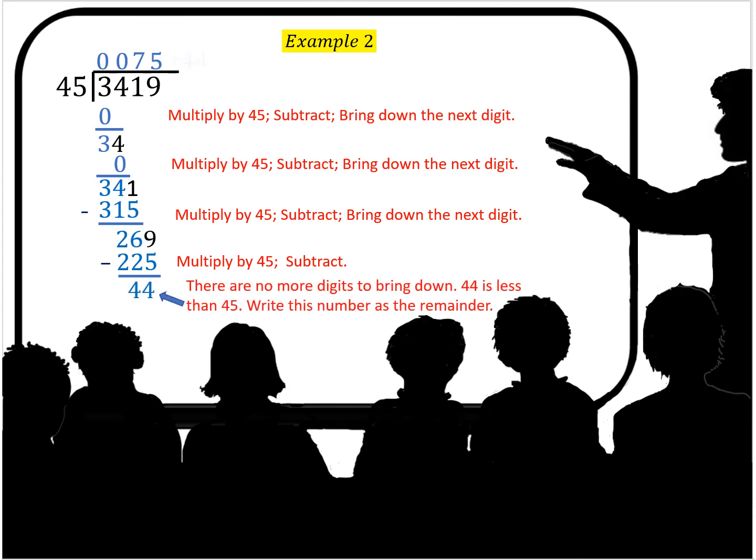There are no more digits to bring down. So 44 is less than 45. We write that number as a remainder. Our final answer is 75 remainder 44.